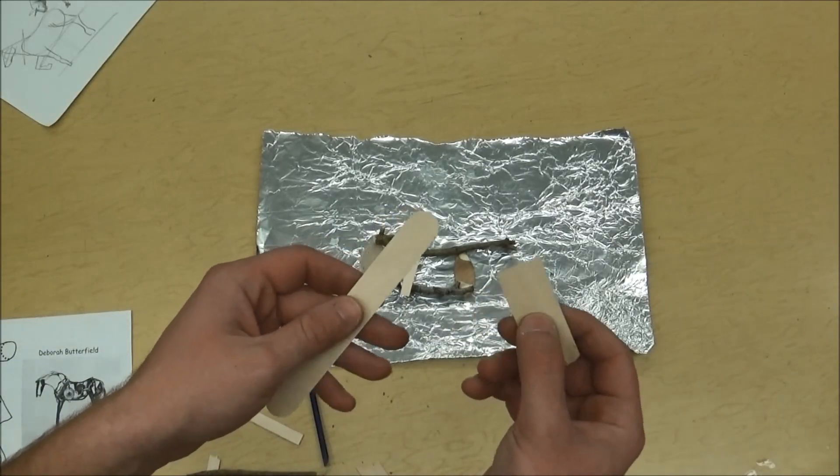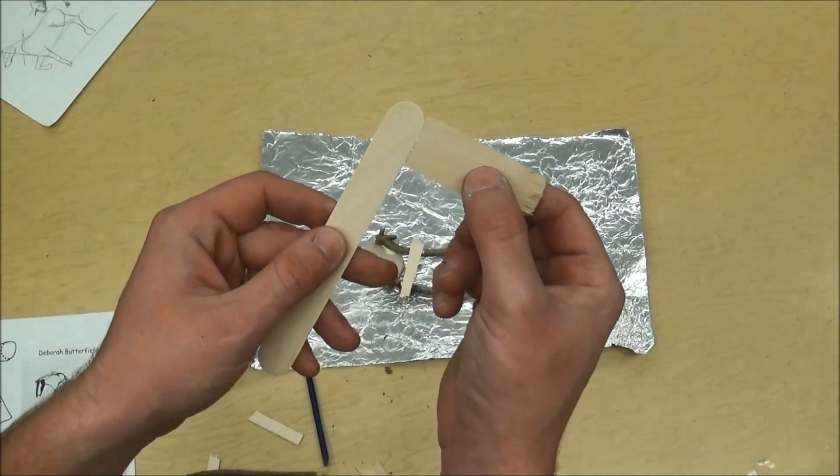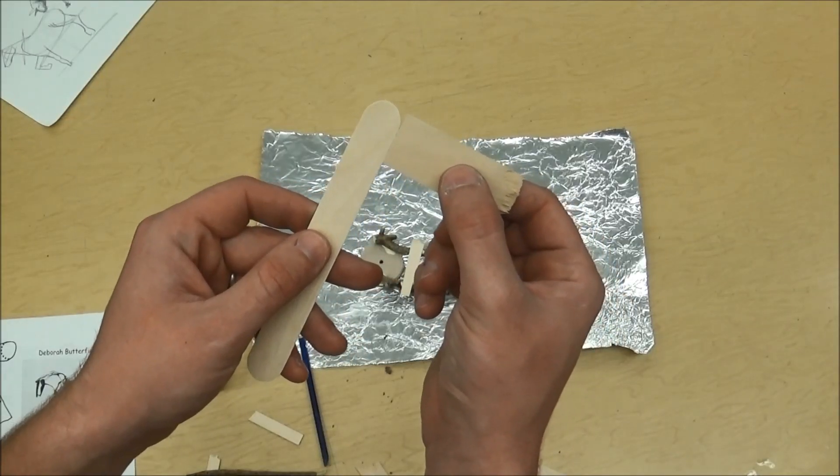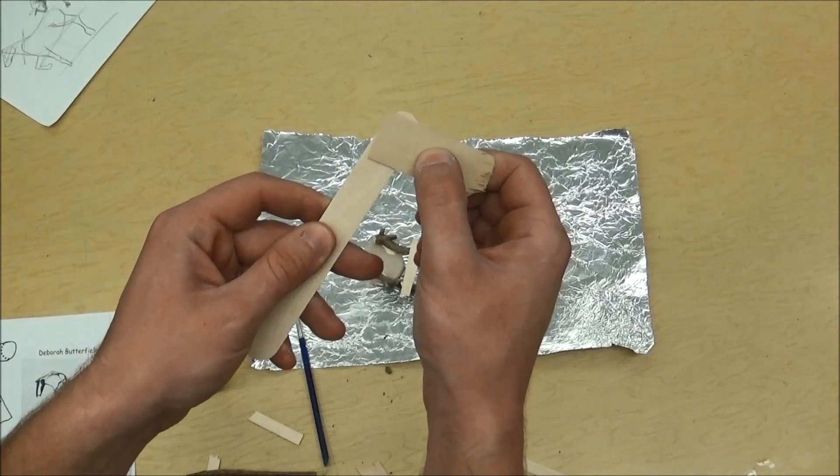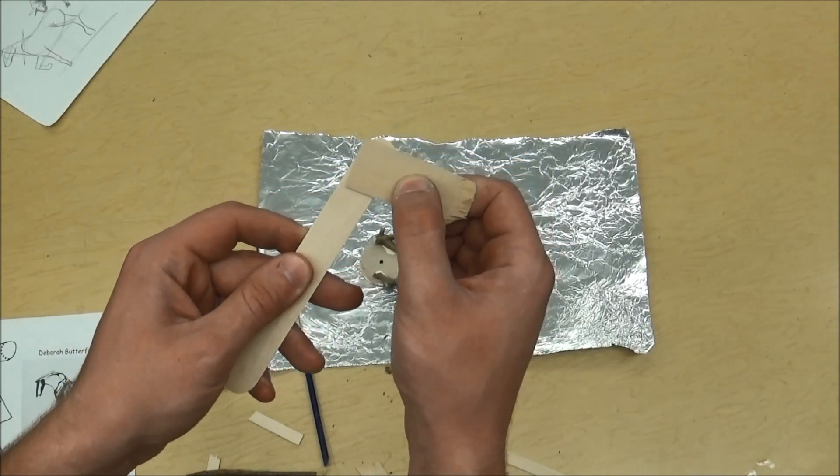If you have two pieces of wood that are touching like this and you glue them, they're not going to be very strong. But if I put glue there and then I cover this one and just let it dry overnight, it's going to be very strong.